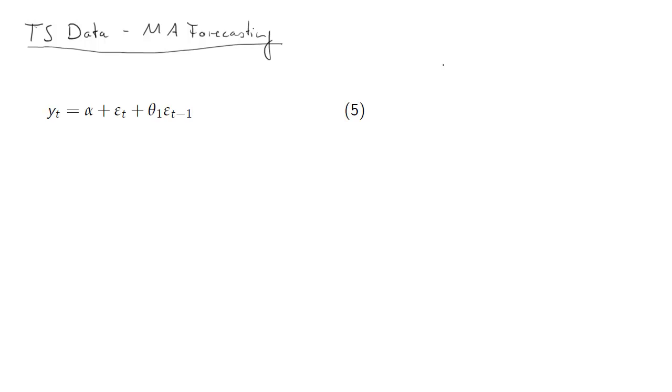In this clip, I will briefly run through the issues arising from forecasting in moving average models. So here we have equation 5 from the lecture. This is, of course, a moving average process of order 1.